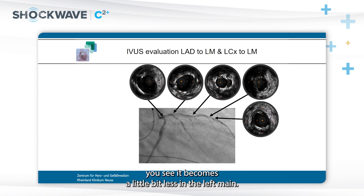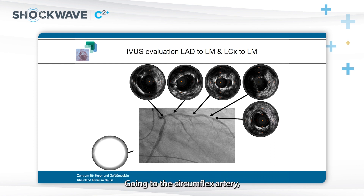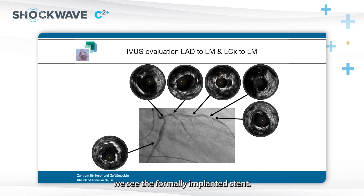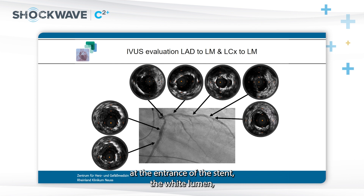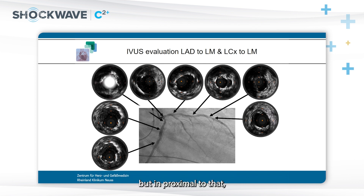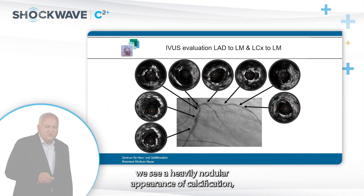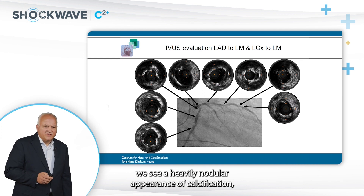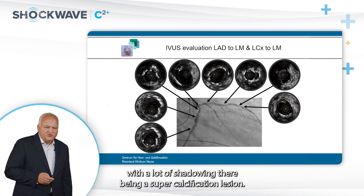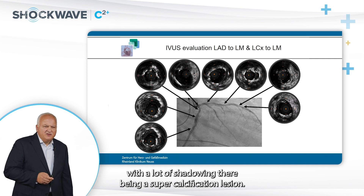Going very proximal, it becomes a little less in the left main. Moving to the circumflex artery, we see the formerly implanted stent, then proximally at the entrance of the stent a white lumen. But proximal to that, we see a heavily nodular appearance of calcification, more than 180 degrees, with a lot of shadowing — a supercalcified lesion.